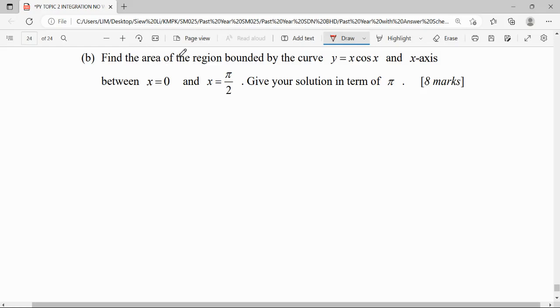Find the area of the region bounded by the curve y = x cos x and the x-axis between x = 0 and x = π/2. Give your solution in terms of π. As we can see, the curve is bounded by the x-axis, so we can integrate it using the integral concept.